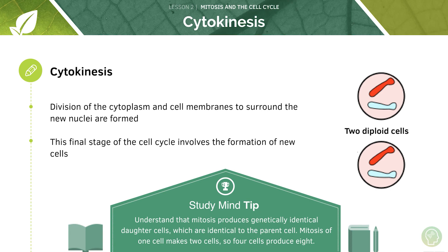It's important to understand that mitosis produces two genetically identical daughter cells — identical to the original parent cell as well as to each other. Mitosis of one cell produces two cells. Mitosis of four cells undergoing mitosis produces eight cells after one round — you always see a doubling in the number of daughter cells compared to parent cells.